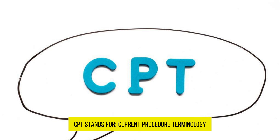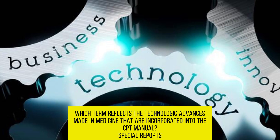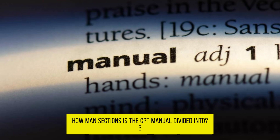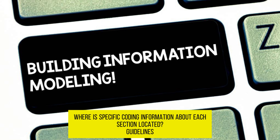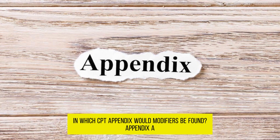CPT stands for Current Procedural Terminology. Which term reflects the technological advances made in medicine incorporated into the CPT manual? Special reports. How many sections is the CPT manual divided into? Six. Where is specific coding information about each section located? Guidelines. In which CPT appendix would modifiers be found? Appendix A.